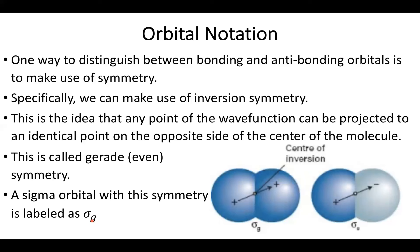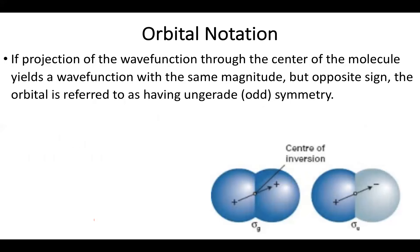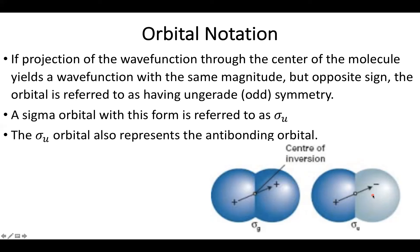We also need to address our antibonding orbitals. The antibonding orbitals have a very interesting property: if I project my wave function through the center of my molecule, I will have the exact same amplitude of my wave function, but it now has the opposite sign. I still have symmetry of a sort, but it's uneven. This is called ungerade, which is German for odd symmetry. The idea of flipping the sign as we do an inversion brings up this idea of odd. Similarly, as I called the sigma bond with gerade symmetry sigma g, this becomes referred to as sigma u. This is going to be often used when we're representing an antibonding sigma orbital.